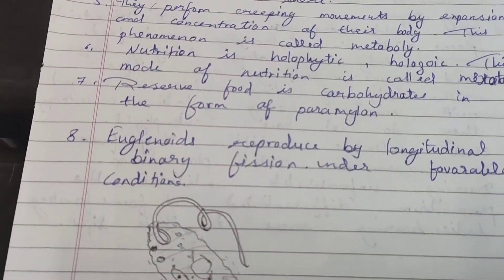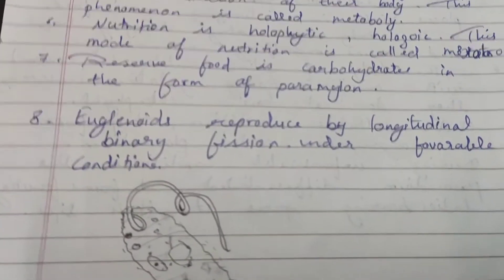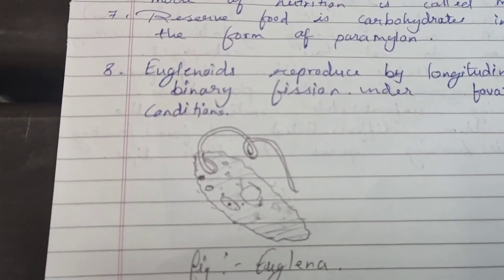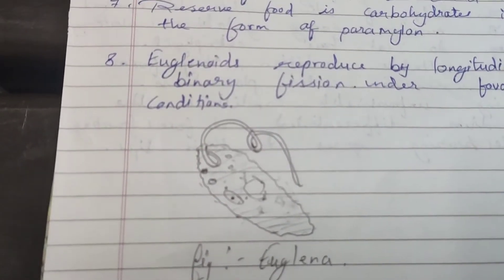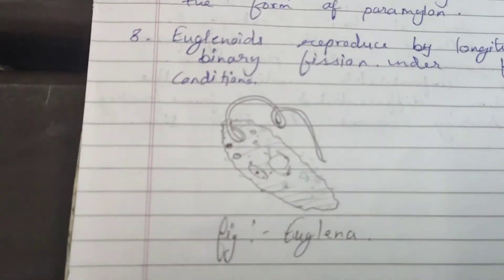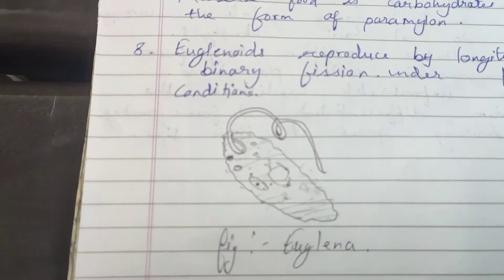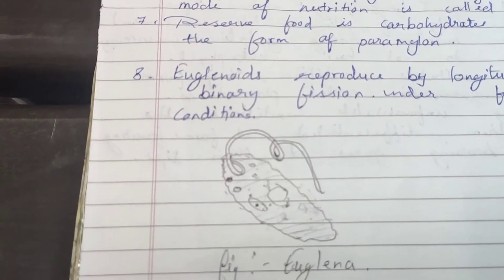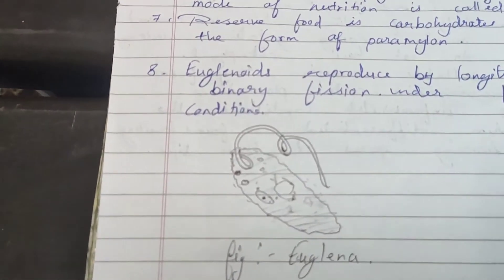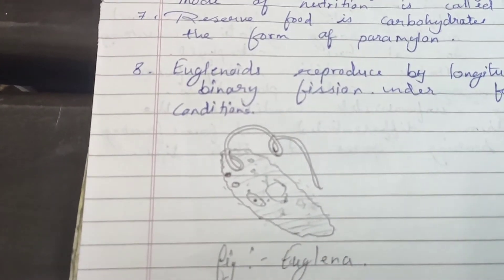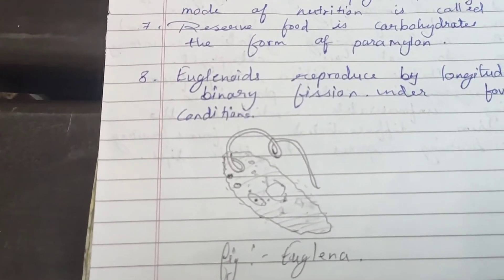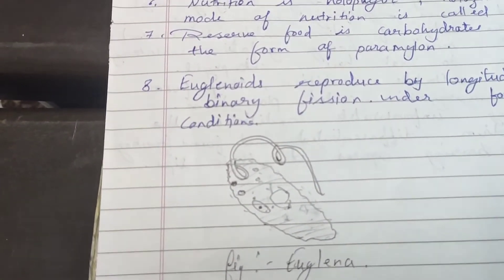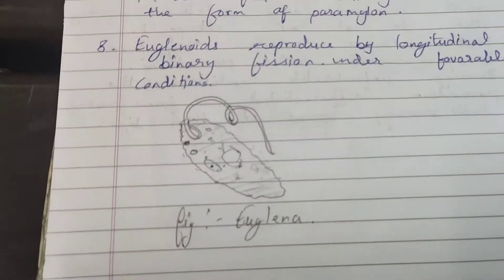Euglenoids are considered as both a plant and an animal. Plant features include: chloroplast present, chlorophyll present, and holophytic nutrition. Animal features include: pellicle present, cellulose absent, contractile vacuole present, and reproduction by longitudinal binary fission.